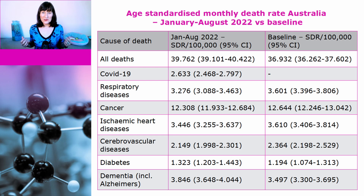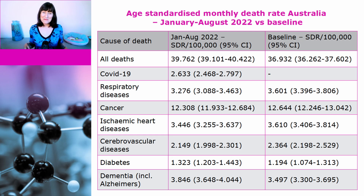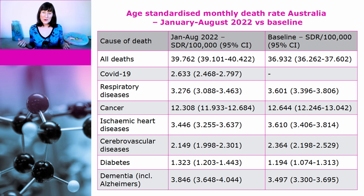Also important is what causes of death haven't increased. Respiratory diseases, cancer, ischemic heart diseases, and cerebrovascular diseases have all decreased compared with baseline, though the decreases are not statistically significant. This is important because anti-vaxxers claim that vaccines are causing increases in cancer, heart attacks, and strokes. If this were the case, we would be seeing increases in highly vaccinated Australia — but we are not. Another big claim of anti-vaxxers is that vaccines are causing excess mortality in young people.